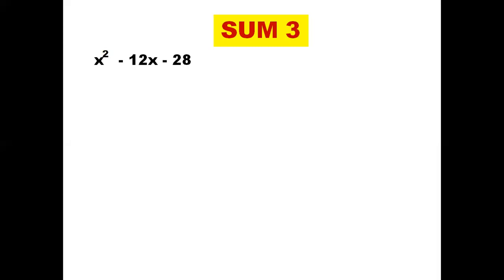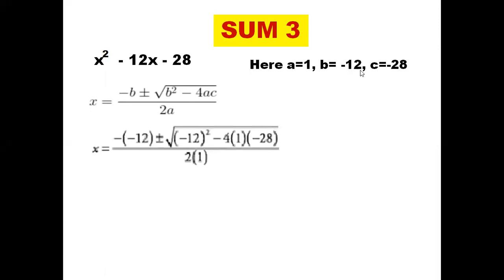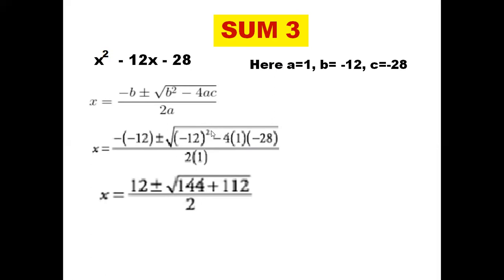Now moving to problem 3: x² - 12x - 28 = 0. Comparing with ax² + bx + c = 0, we see a = 1, b = -12, c = -28. Now let us substitute the values: x = -(-12) ± √((-12)² - 4 × 1 × (-28)), divided by 2 × 1. Minus minus gives plus 12, plus or minus. (-12)² = 144. Since minus times minus is plus, we get 4 × 1 × 28 = 112. So 144 + 112.